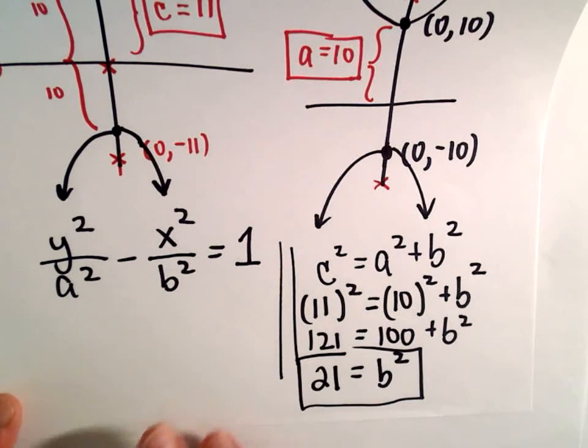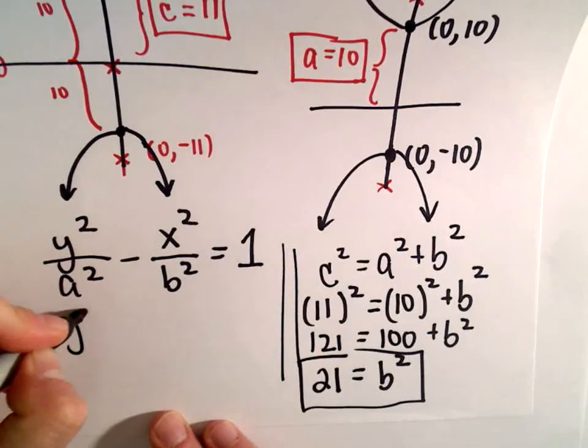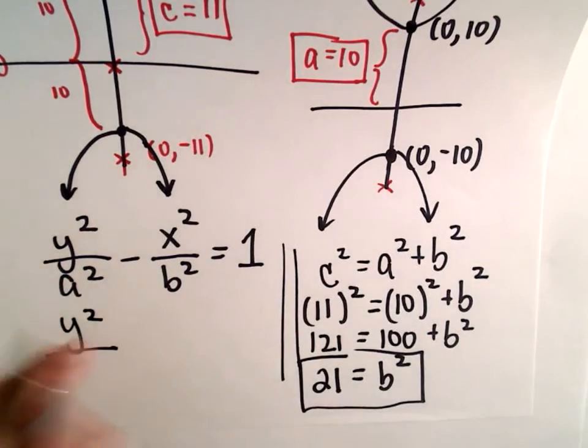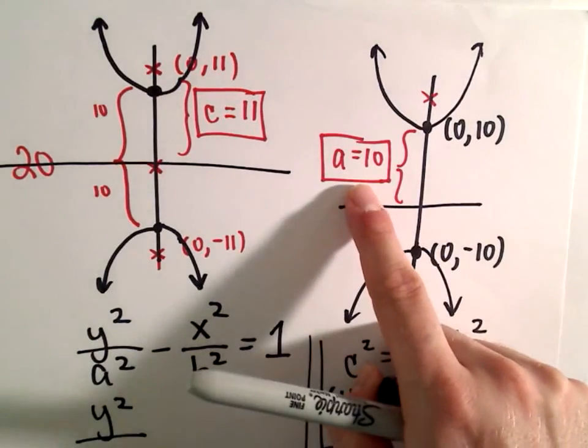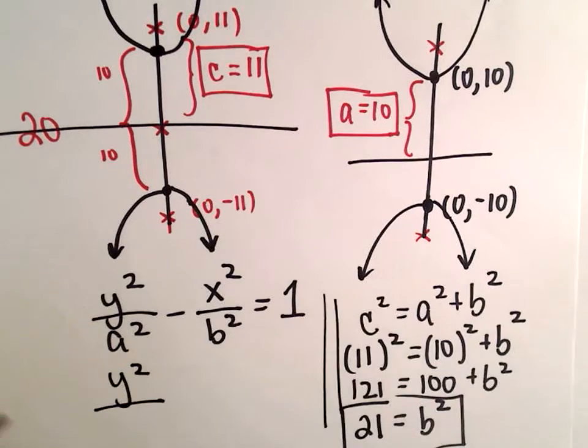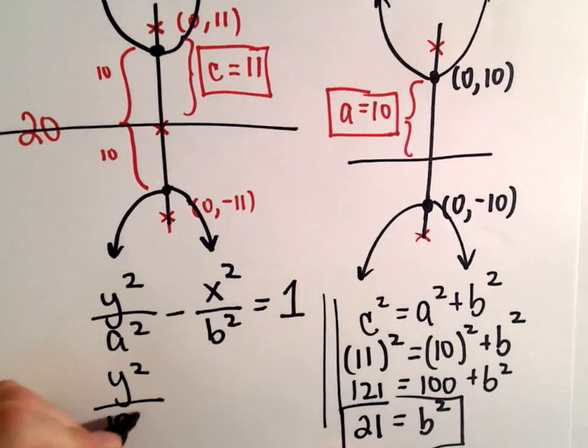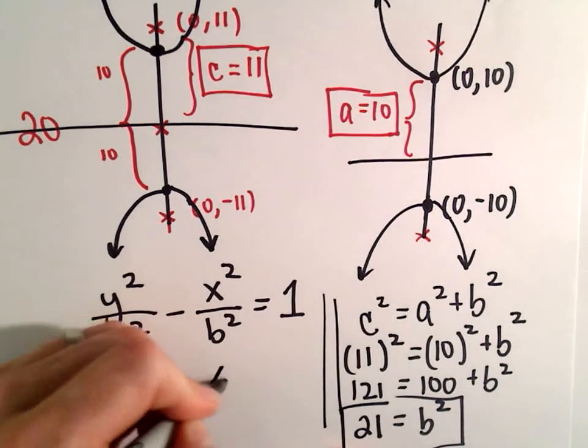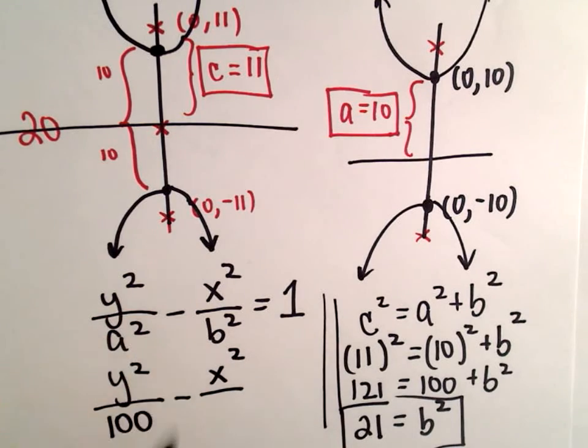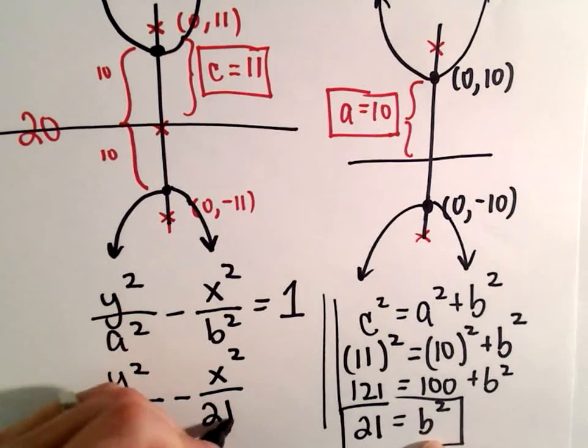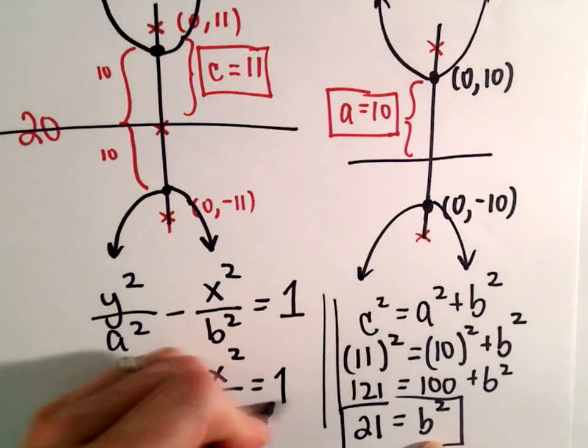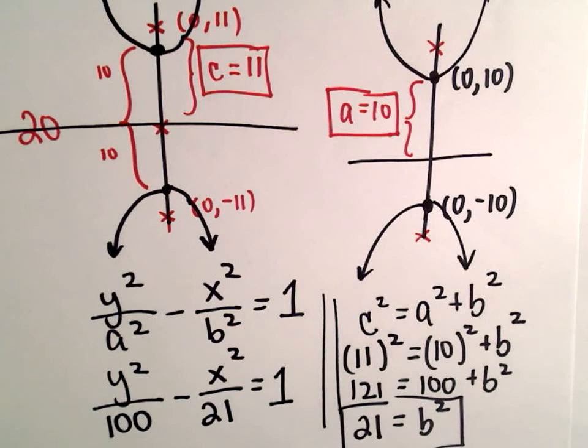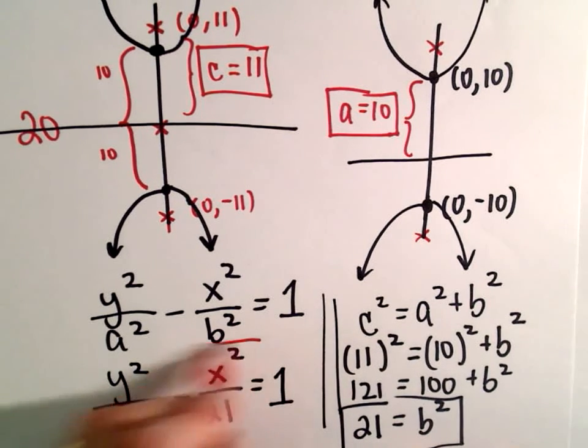And now we can just fill in our equation. So we have y² over a². a had value 10. So if we take 10 and square it, we'll get 100 minus x² over b², which we said is 21. Set that equal to 1, and now we've got the equation of our hyperbola.